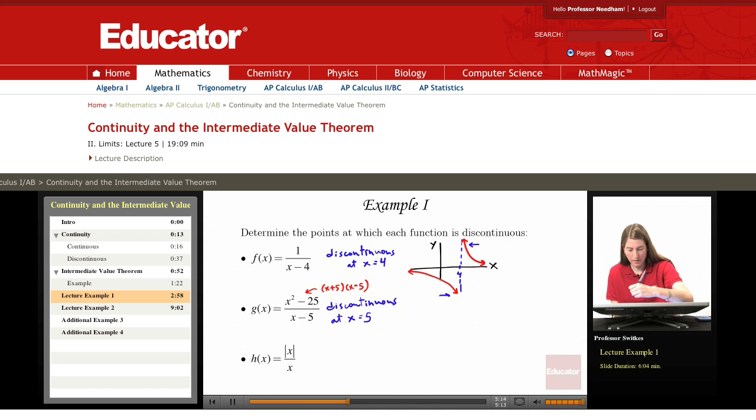So while it is definitely the case that this function is discontinuous at x = 5, it's a less serious type of discontinuity because all that's going on at 5 is that we have a little open circle there because our function is undefined at 5.